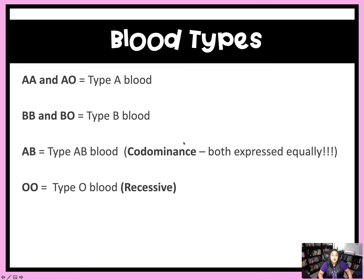So here are your different blood types — there are a total of four. There is blood type A, blood type B, blood type AB, and blood type O. Each of these blood types can have a different number of genotypes. Type A blood can be AA or AO, because O is the recessive allele. Type B blood can be BB or BO, because again O is the recessive allele. Type AB can only be of one genotype, which is AB itself, because this is co-dominant and both are expressed equally. And then type O will be OO, because this is recessive — you need two O alleles to have type O blood.